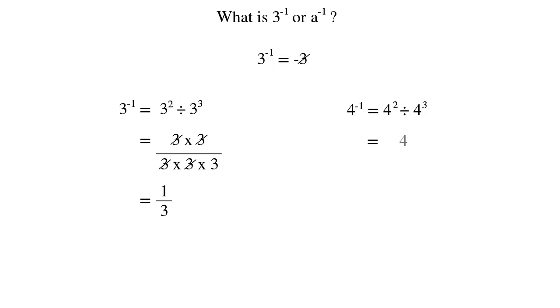Again, we can write this out in longhand. 4 times 4 over 4 times 4 times 4. Cancel this down and we get 1 over 4.